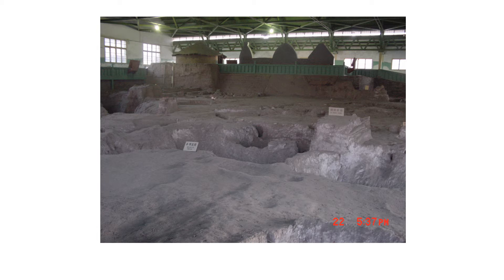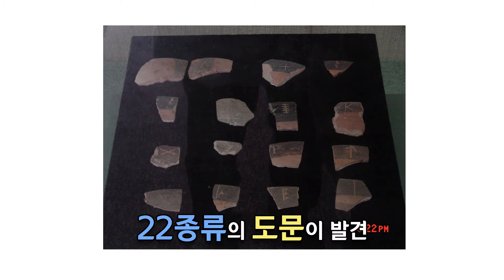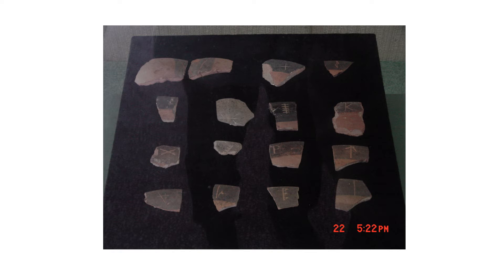6천 년 전 사람들이 살던 마을 터입니다. 당시에는 다 반혈거 생활을 했기 때문에 지붕이나 기둥은 이미 썩어 없어졌지만 반혈거 흔적은 명확하게 남아있지요. 거기서 22가지 종류의 도자기 파편에 글자 비슷한 것들이 새겨진 것이 발견됐어요. 총 발견된 개수가 22개가 아니라 종류가 22가지입니다. 많은 중국 학자들은 이 도문을 최초의 한자라고 주장하고 싶겠죠.